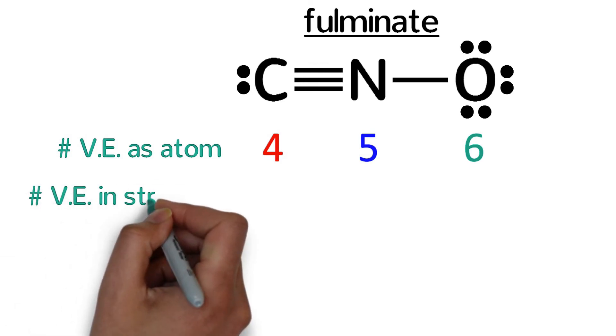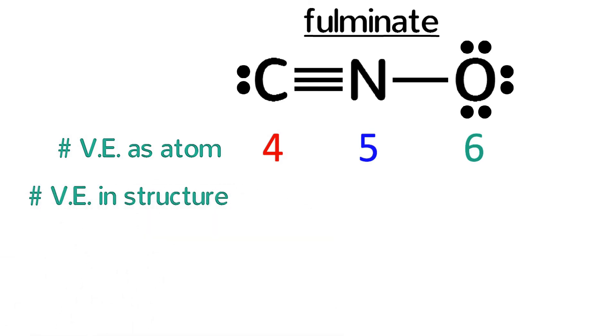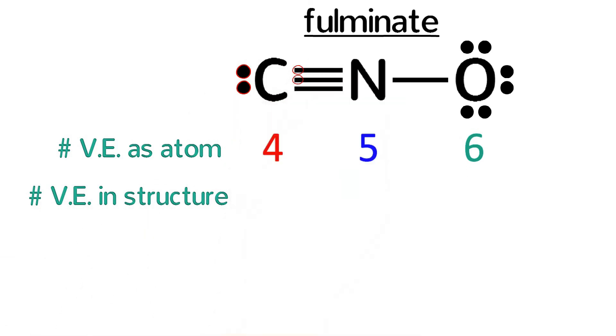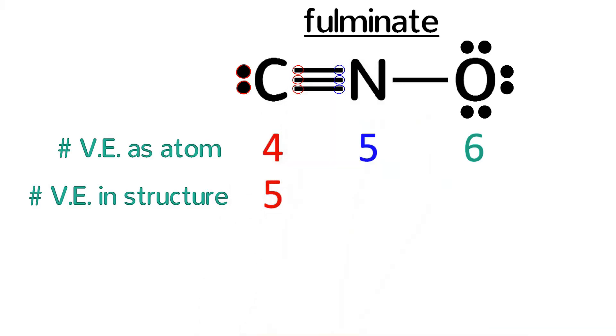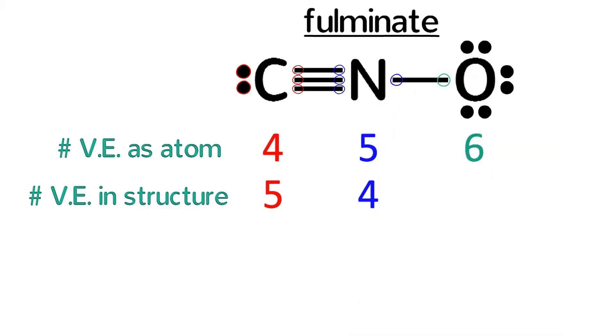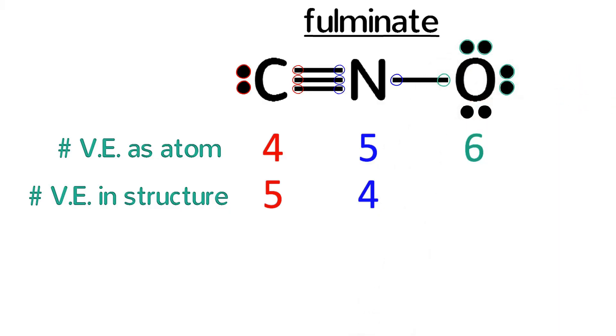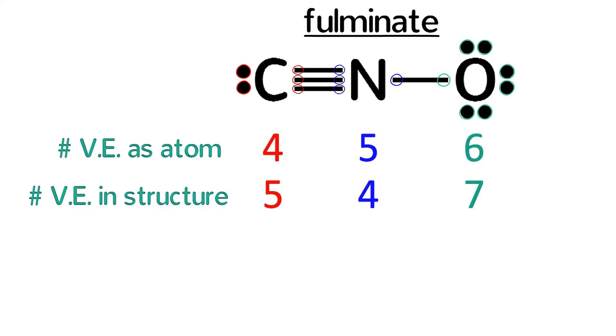Next, let's count the valence electrons in the structure. Carbon has one, two, three, four, five valence electrons. Nitrogen has one, two, three, four valence electrons, and oxygen has one, two, three, four, five, six, seven valence electrons.